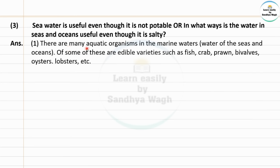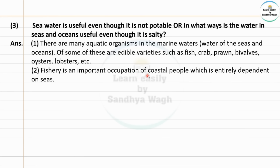Answer: There are many aquatic organisms in the marine waters. Marine water means the water of the seas and oceans. In this marine water, various types of aquatic organisms live. Of these, some are edible varieties — such as fish, crab, prawn, bivalves, oysters, lobsters, etc.